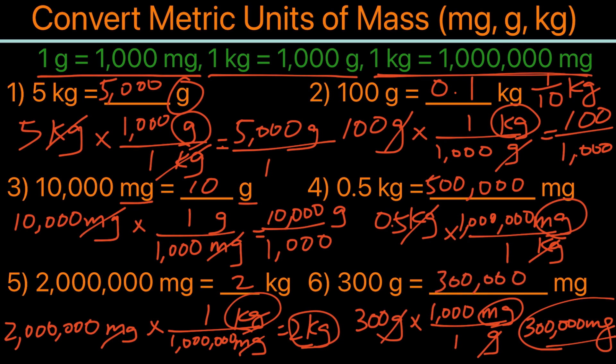These six examples show how to convert metric units of mass between milligrams, grams, and kilograms. You need to first know the conversion, then multiply with the proper unit of measure in the right position, and it will end with the unit you need. Hopefully this is helpful — thank you for watching.